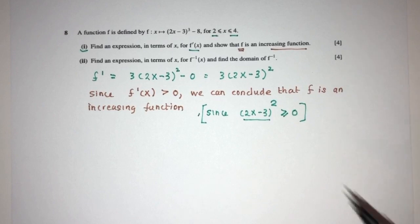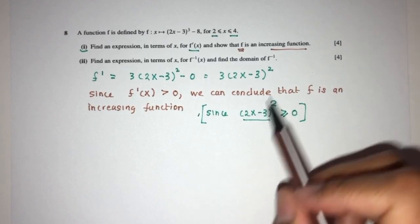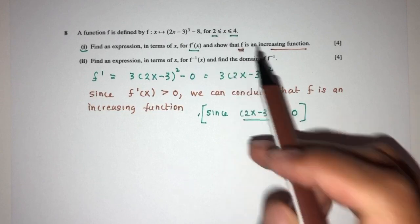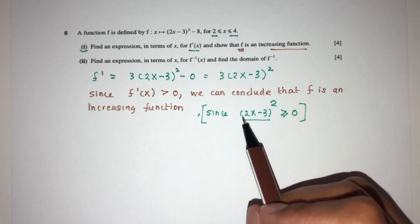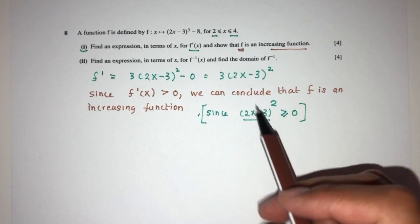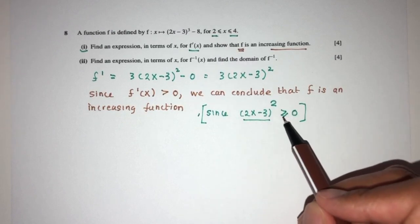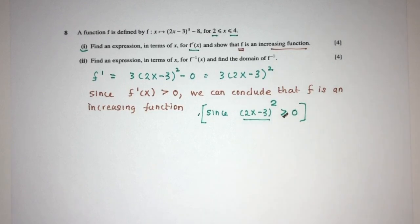But here, obviously, it will never be equal to 0, because for these values of x, this will never be 0, because it is only 0 when x equals to 1.5, and 1.5 is outside of this domain, so it will only have to be more than 0. Because of that, we will have an increasing function.